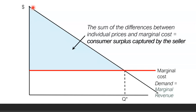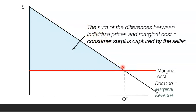You might ask: why would somebody buy something if they don't get any surplus? We could suppose that the seller is leaving them with a surplus of five cents or something like that. Logically speaking, somebody will buy something if they're going to at least get a little surplus. The difference between marginal cost and the price that the seller is receiving is an amount adding to the seller's profits, and it's also consumer surplus captured by the seller compared to a situation in which the price was simply set equal to marginal cost — which would be the case in a competitive market.